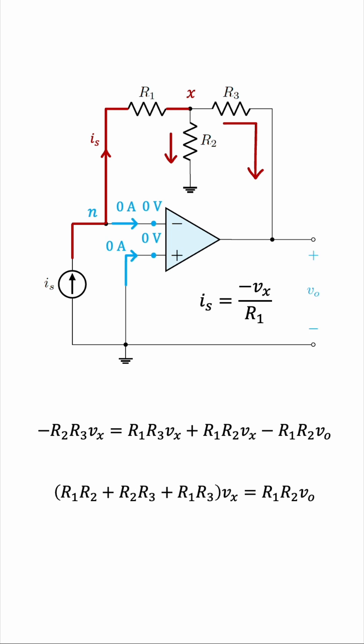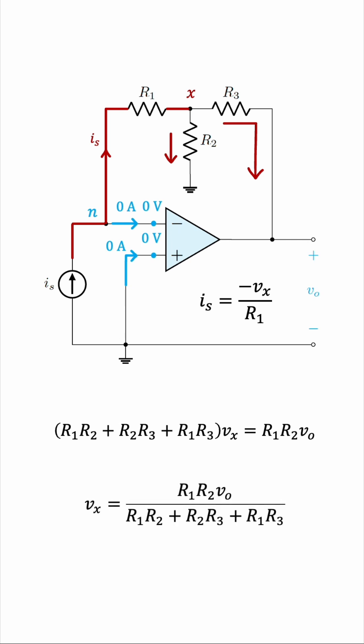Good. So now we can find Vx in terms of V0 by dividing by this big factor. So now we have Vx in terms of V0 only, and we can now bring this equation back and substitute this Vx which we found.